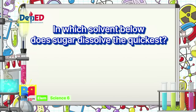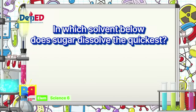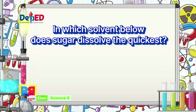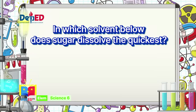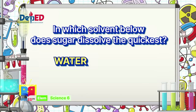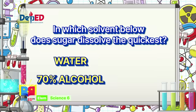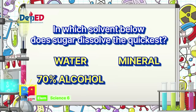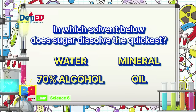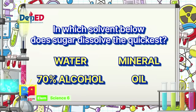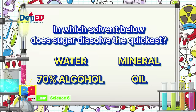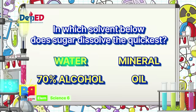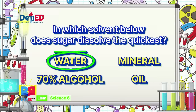Number 4: In which solvent does sugar dissolve the quickest — water, 70% alcohol, mineral, or oil? The correct answer is: Water.